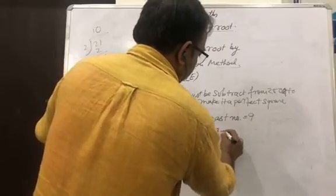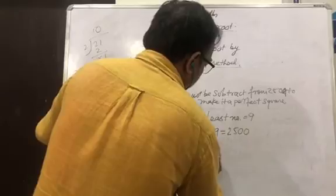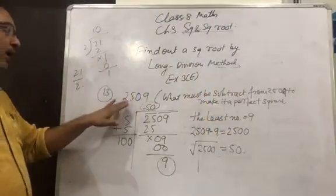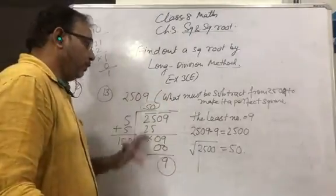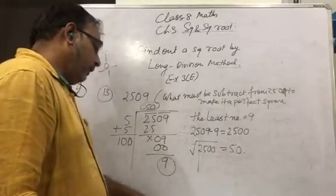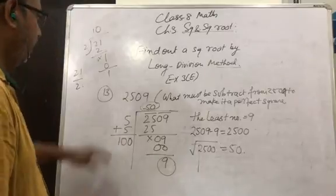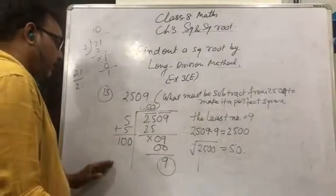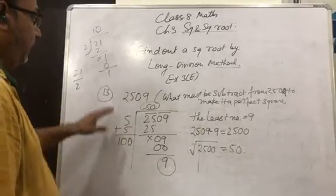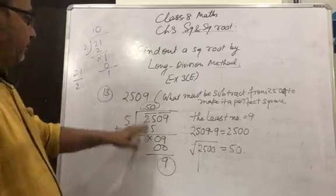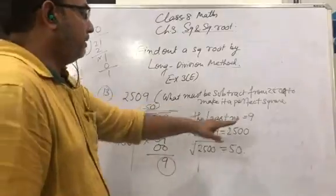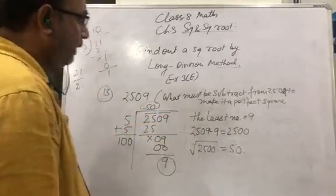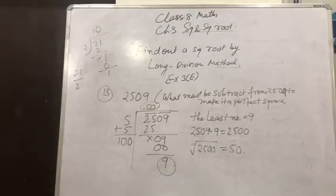So the remainder is 9, and the least number is 9. If we subtract 9 from 2509, we get 2500, and √2500 = 50. So the least number that must be subtracted from 2509 to make it a perfect square is 9. The rest we will discuss in class.